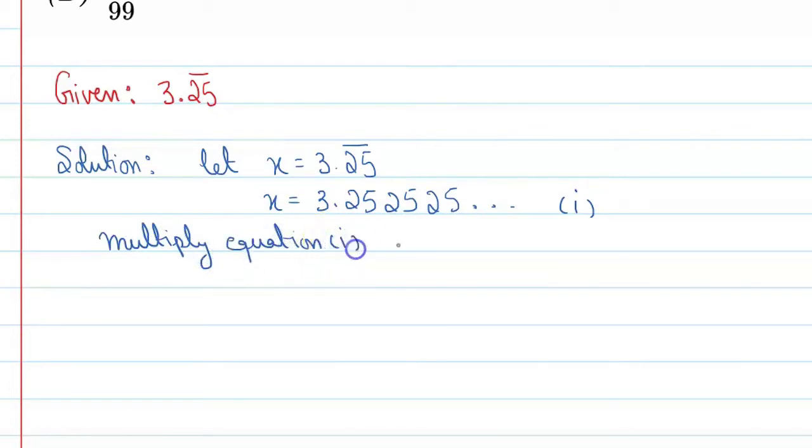So we will get 100x equal to 100 into 3.25 25 25 and so on. 100x as it is. When we multiply this, the decimal shifts two digits to the right. So we can write this as 325.25 25 25 25 and so on.